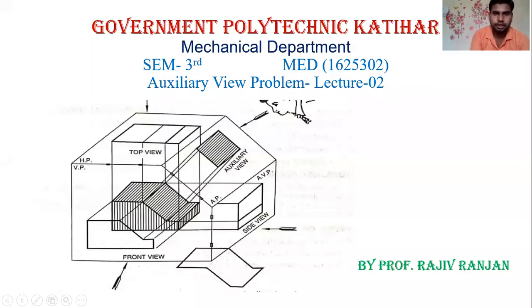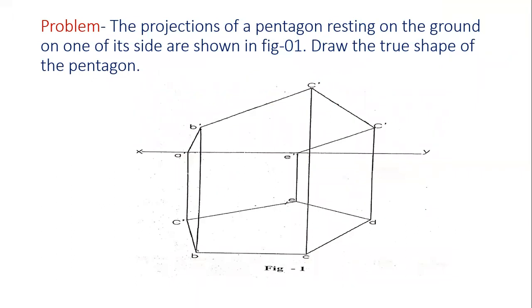Good morning. In today's lecture we are going to see a problem on auxiliary view. In the given orthographic view, a pentagon is shown in the figure which is resting on the ground on one of its sides. In this problem we have to determine the true shape of the pentagon.